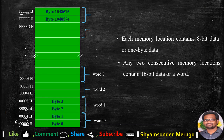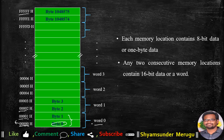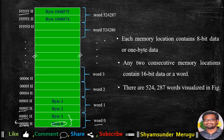Any 2 consecutive memory locations contain 16-bit data, or a word. Each location stores 1 byte, and if you want to store 16-bit data, 2 consecutive locations can be used, which we call a word. So if we take 2 bytes as a word, there will be around 524287 words, or 1048576 bytes, that can be stored within the 1MB physical memory of the 8086.